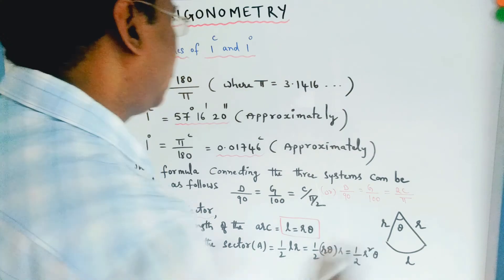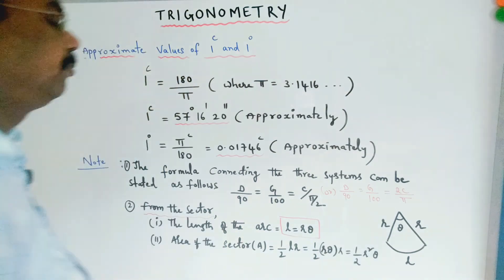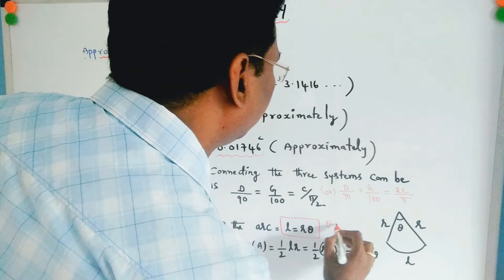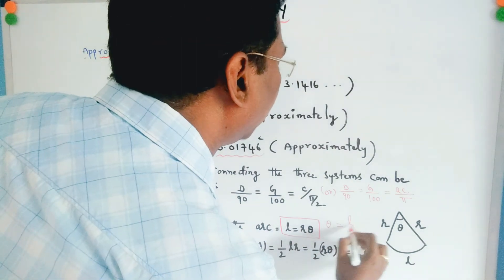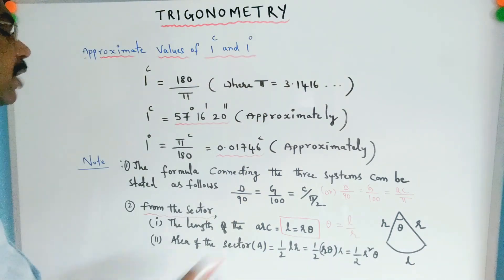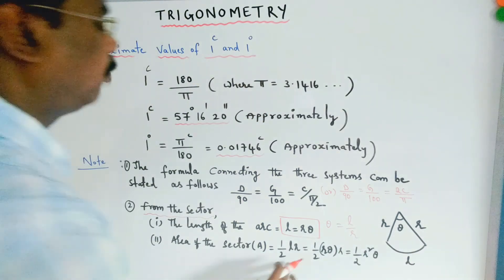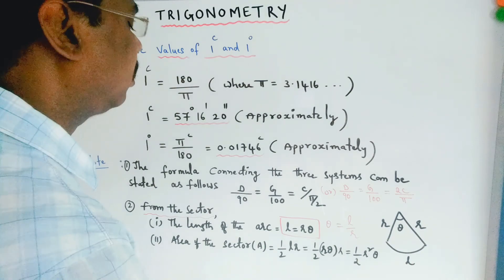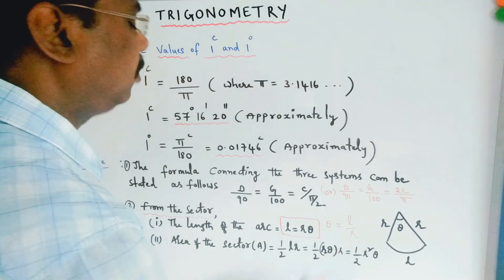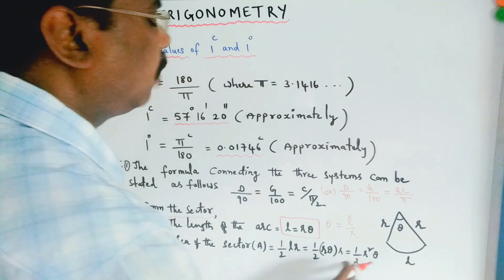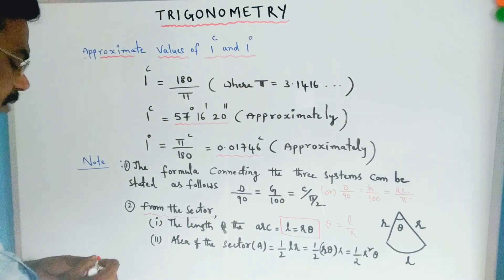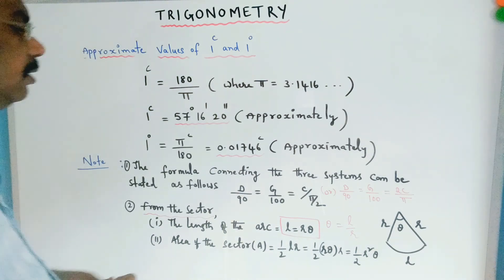From the sector: the length of the arc l equals r·θ, and therefore θ equals l/r. The area of the sector A equals (1/2)·l·r. Since l equals r·θ, this gives A = (1/2)·r²·θ.